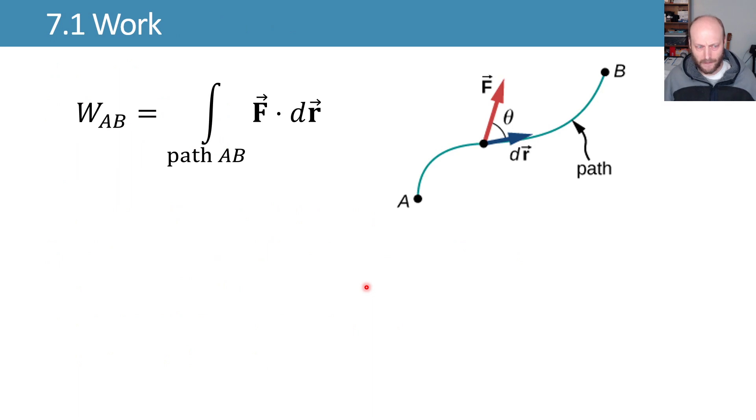First, work. We define work in the context of physics as the integral of our force applied along a path dotted with that path. So if we start from point A and we're going to point B, the work done by a force as our object travels along this path is equal to the integral of whatever the force that's being applied on that object at that point in time is dotted with my little bit of path, my dr, along that path. So we integrate along this path.